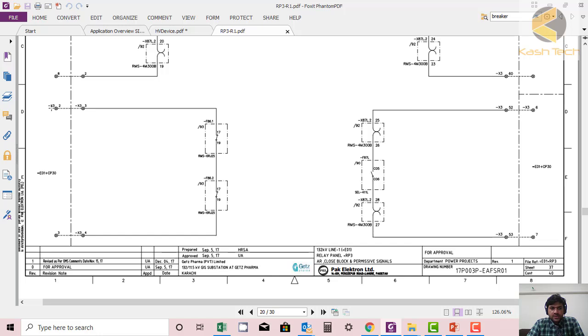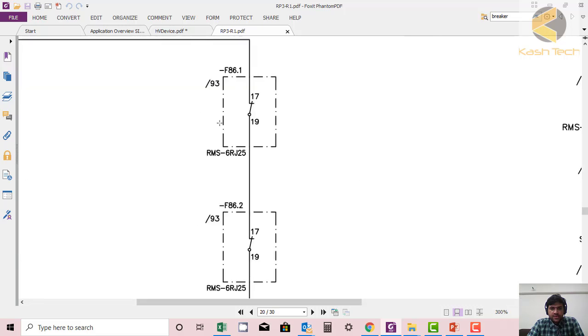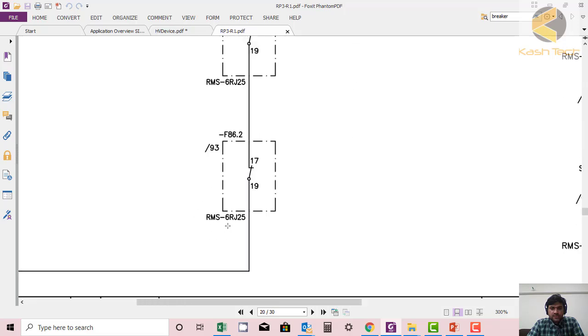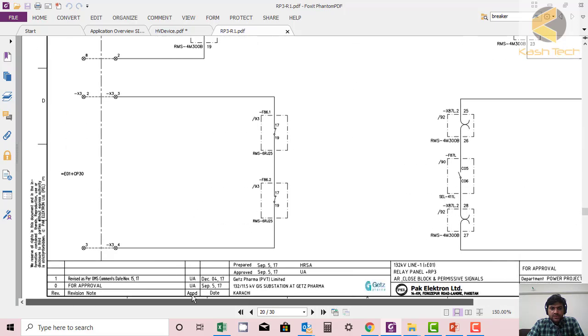Here it's coming from the LCC and then it's passing through lockout 1 FT 6.1 in series with another lockout 6.2, and then again it's going back to the control panel. It means that this DC supply should be through each lockout relay contact, NC contact. So any contact operate, it should be able to block the closing.